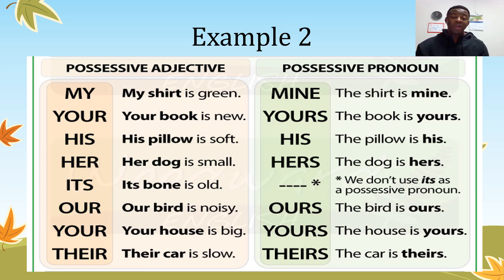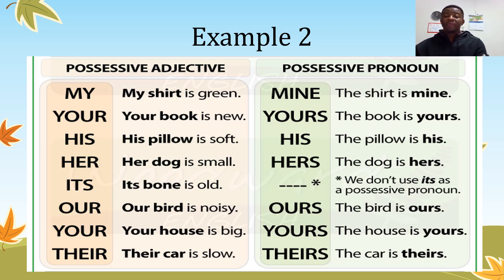Her dog is small — the dog is hers. Its bone is whole — we don't have 'its' as a possessive pronoun for that. Our bird is noisy — the bird is ours.